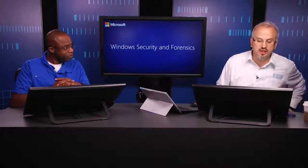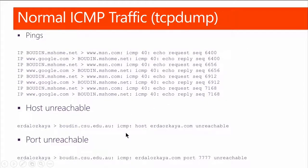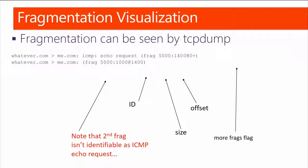Here is a normal ICMP traffic example. Using TCP dump, here's my ping — getting accurate replies. Here I got a host-unreachable response. Here's my three-way handshake as demonstrated with Raymond — I'm trying to connect. All this can be captured and dumped. Fragmentation details: what is the ID, the size, the offset, the flags.